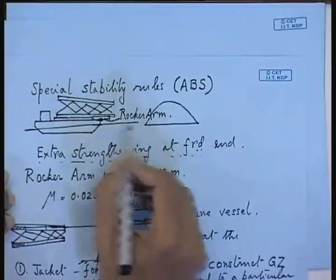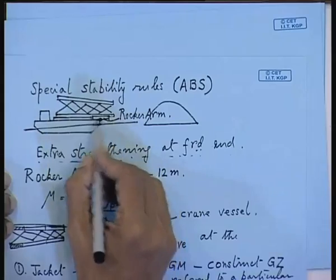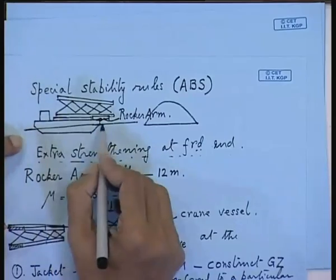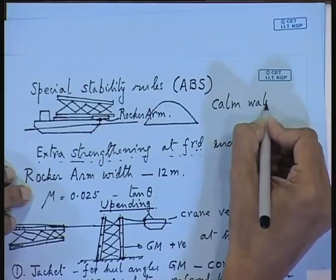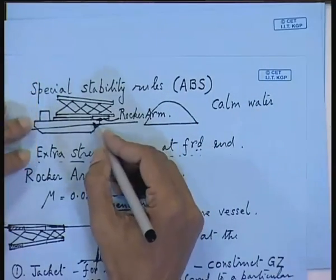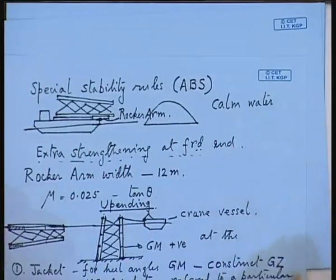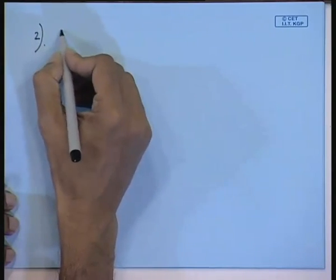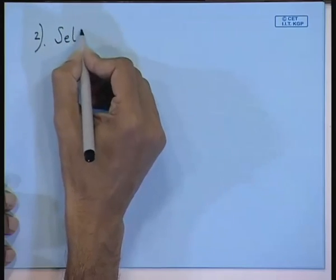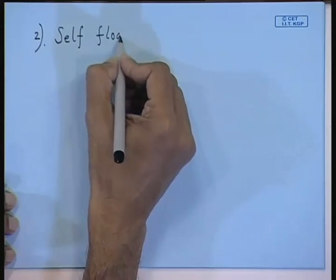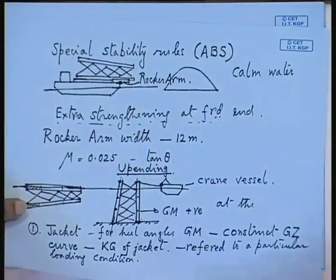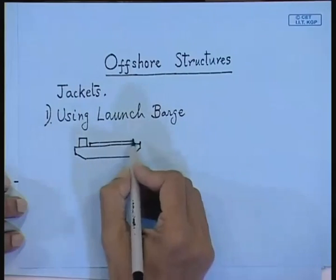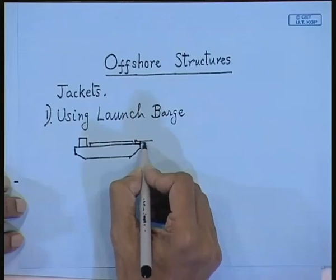After the jacket has been sited on the seabed, you start driving the piles. While launching, the whole weight of the jacket comes on the rocker arm, and you should see that this operation is done in calm waters — there should be no storm, otherwise the barge might heel and the jacket could come off. This is called barge launching. The other method is called self-floating jackets.